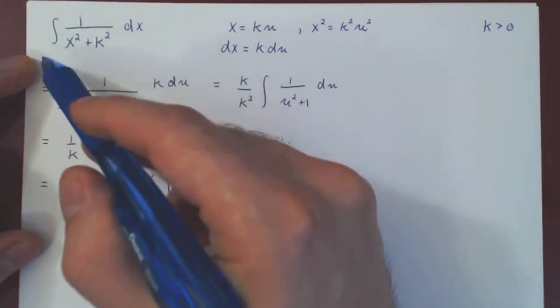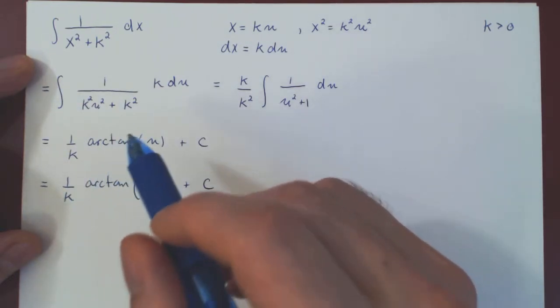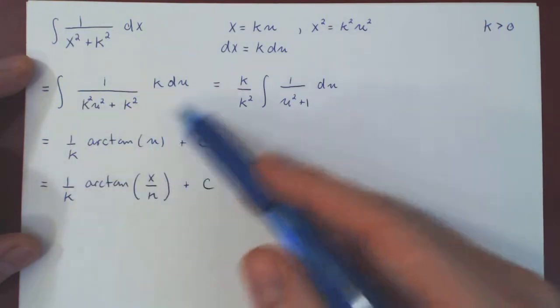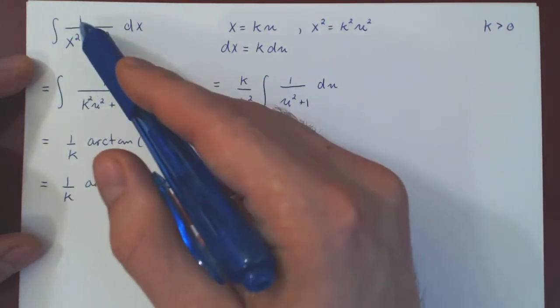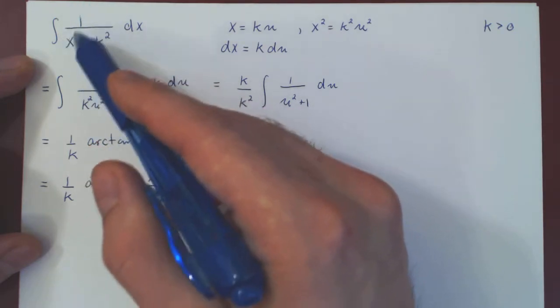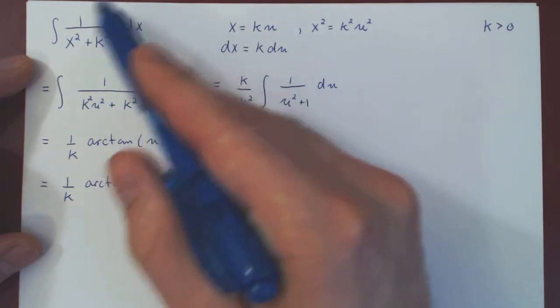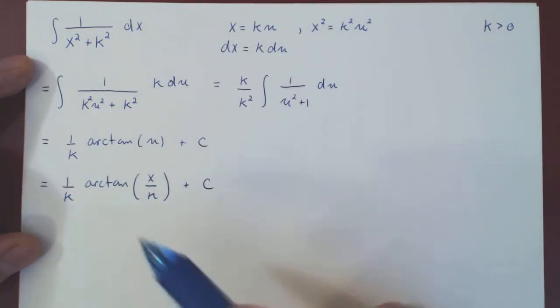And this completes our integration problem. So if you ever see this integral coming up in the integral of a rational function using the method of partial fractions, you don't have to re-derive this over and over again, as this will come up fairly frequently. So you can say, okay, this is the integral of 1 over x squared plus k squared with respect to x. So it's going to be 1 over k arctangent of x over k plus c. And that's it.